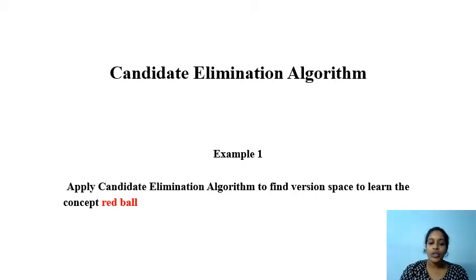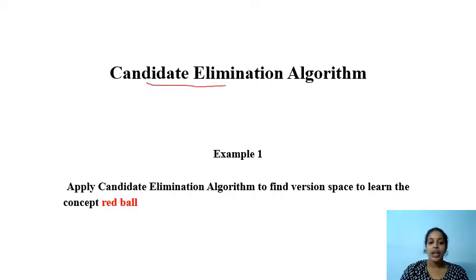Now we are going to learn about another algorithm to find version space — the Candidate Elimination Algorithm. After discussing this algorithm, we will make it more clear by solving a problem to find the version space for the concept 'red ball'.